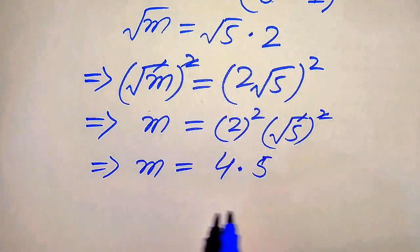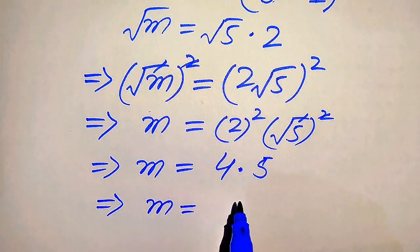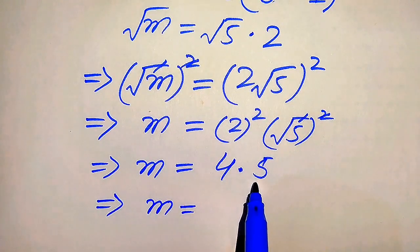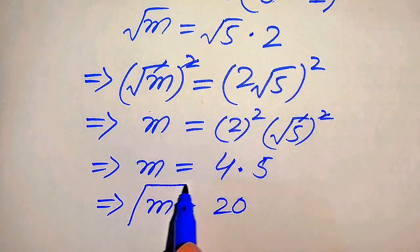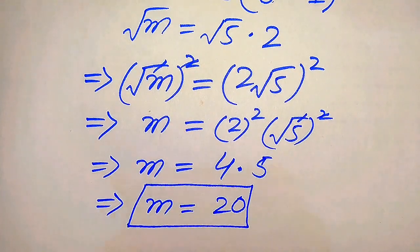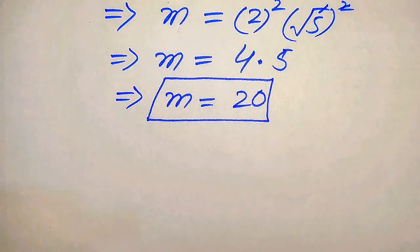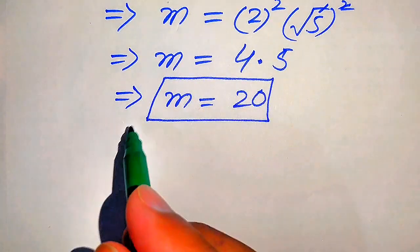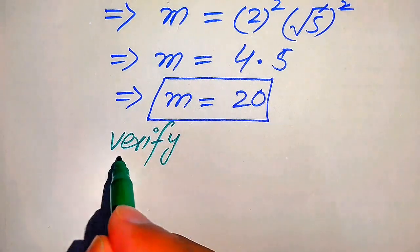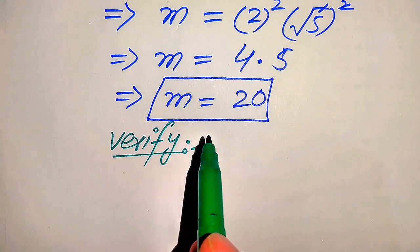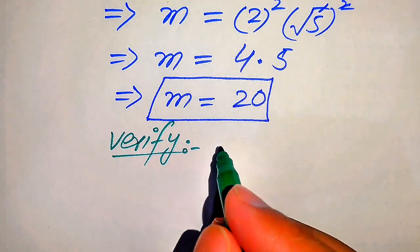So m equals 4 times 5, which equals 20. This is our answer. Now in the next step we need to verify this value of m, because our given question is a radical equation, so we check whether this is a valid solution or an extraneous root.